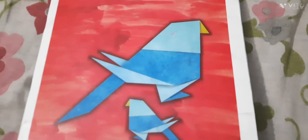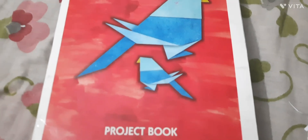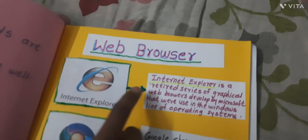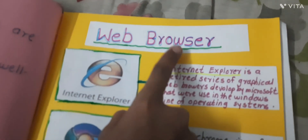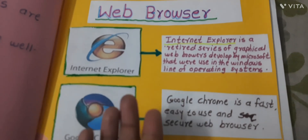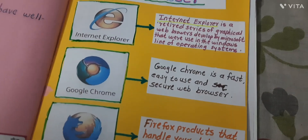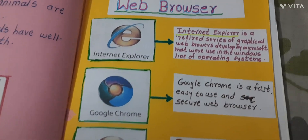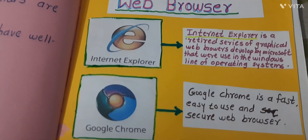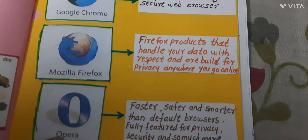Hello friends, welcome to my channel Dhanushri Classes. Today we are seeing our project of computer web browser. We are seeing some types of web browsers. We have listed four web browsers: first is Internet Explorer, Google Chrome, Mozilla Firefox, and Opera. Let's start.